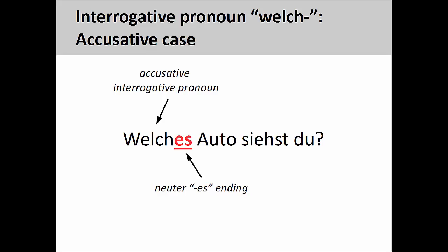And like the prior slide, although the neuter -es ending could be either nominative or accusative, the presence of 'du' also shows that 'welches Auto' must be in the accusative case.